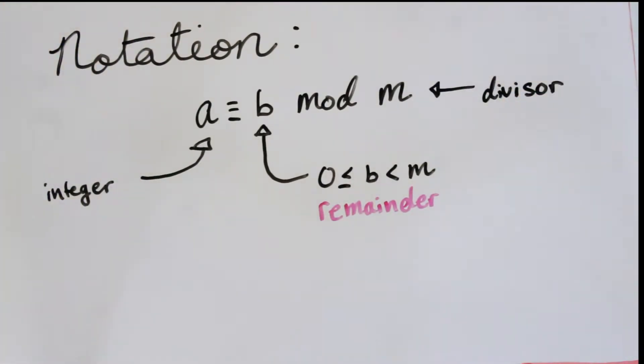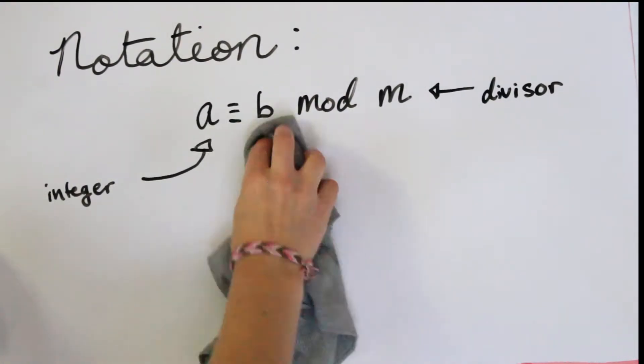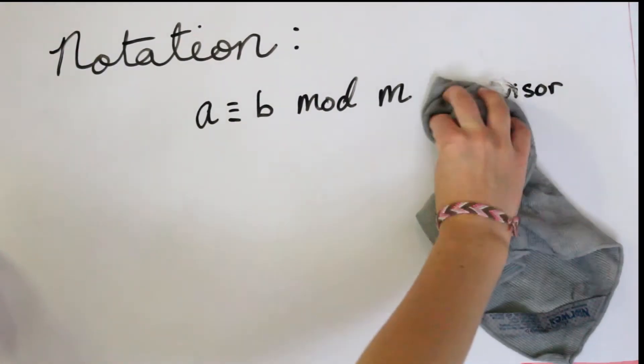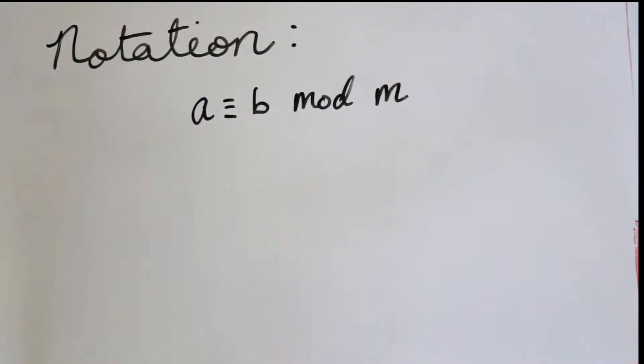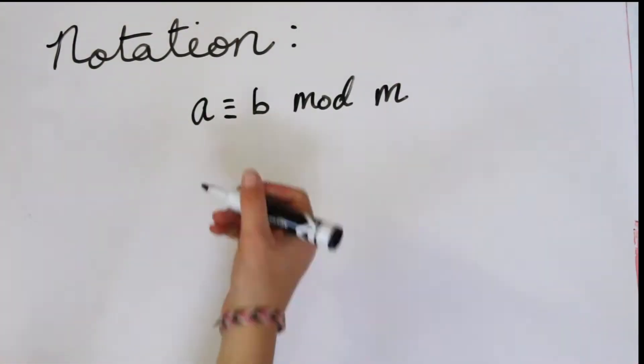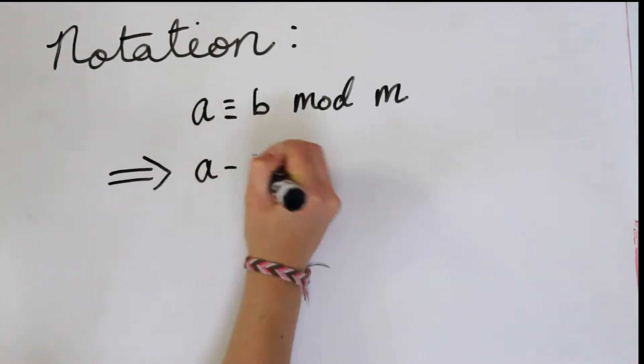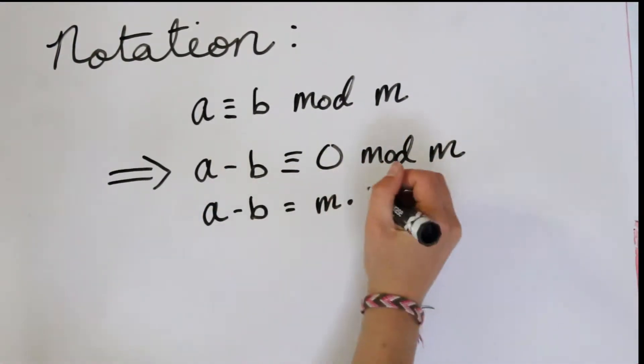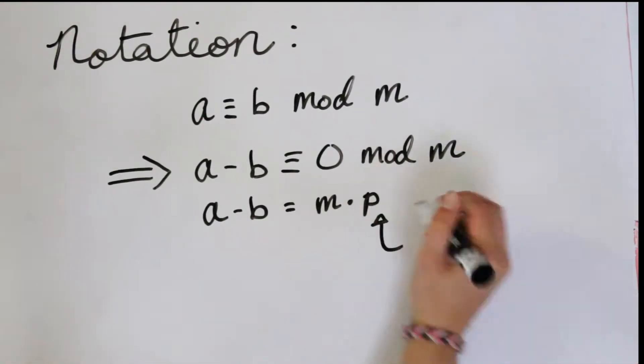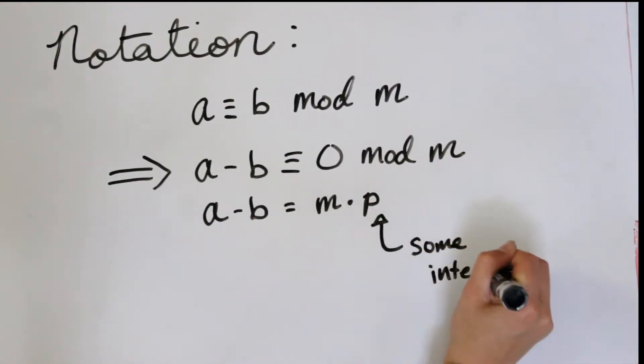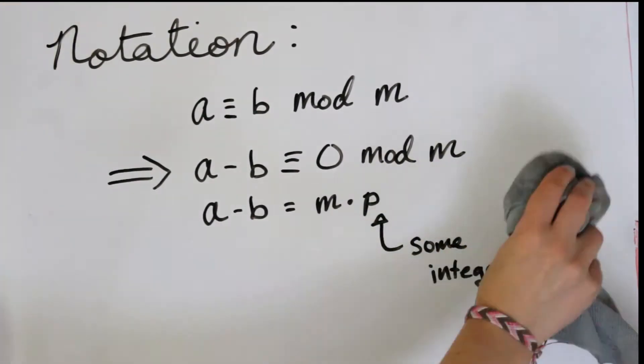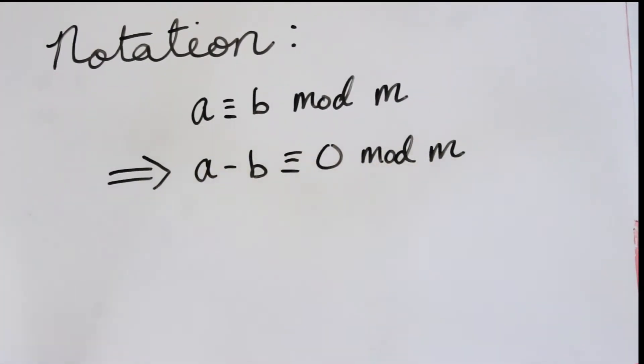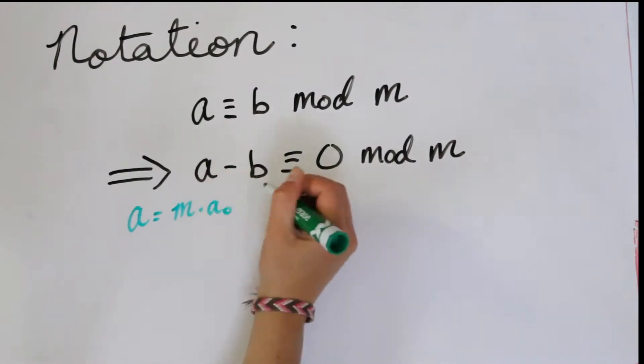And then m is our divisor, so it's what we divide a by to get b. Now from this congruence, we can actually conclude that a minus b is congruent to zero mod m, and that therefore a minus b is some multiple of m, so m times some integer, let's call it p.